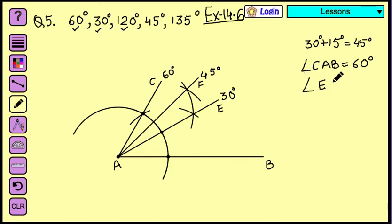Angle E, A, B is your 30 degree. Now angle F, A, B is your 45 degree. Now that means we have done with 45 degree also.